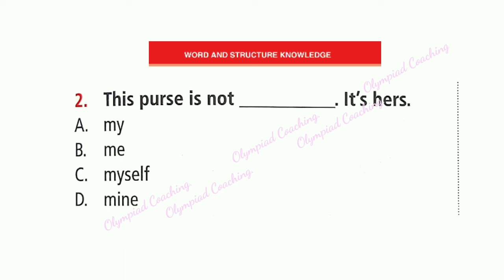Question 2: This horse is not dash. We need a possessive pronoun. All words in the option are first person singular but in different forms. 'My' is an adjective, 'mine' is a possessive pronoun, 'me' is objective case, and 'myself' is a reflexive pronoun. So the correct answer is 'mine.' Option D is correct. Who possesses this horse? That is mine. Mine is a possessive pronoun.